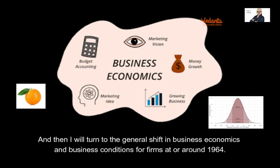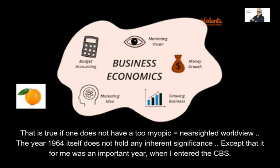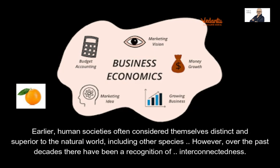Basically, what happened in 1964 — or at least in the second part of the 20th century — was a movement from stability to dynamism. That is true if one does not have a too myopic worldview. Before digging deeper, I must say that the year 1964 itself does not hold any inherent significance in terms of a global shift in how humans are perceived, except that it was for me an important year, namely the year when I entered the Copenhagen Business School. Throughout history, human beings have held various perceptions of their place in the world. In earlier times, human societies often considered themselves distinct and superior to the natural world, including other species. This perspective was influenced by religious, philosophical, and cultural beliefs, emphasizing human exceptionalism and a hierarchical view of the world.